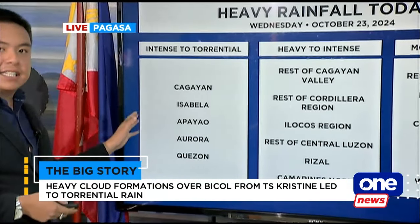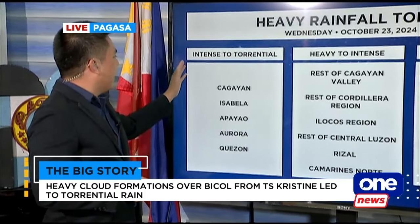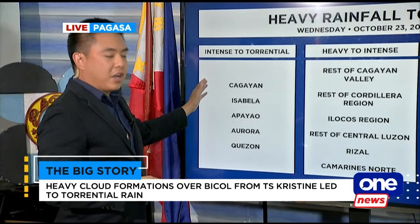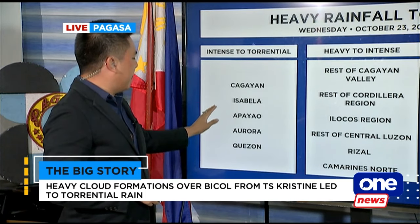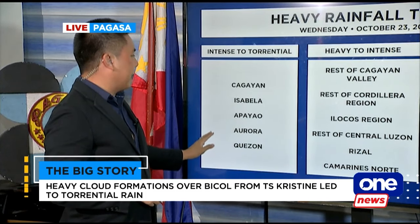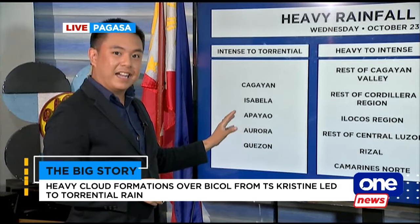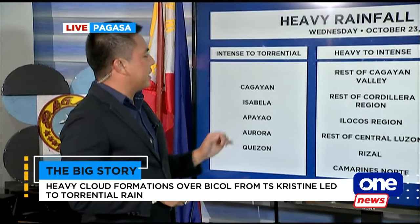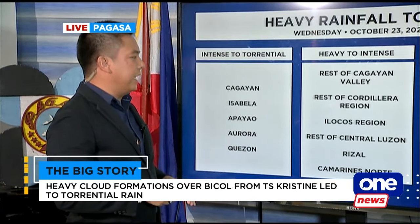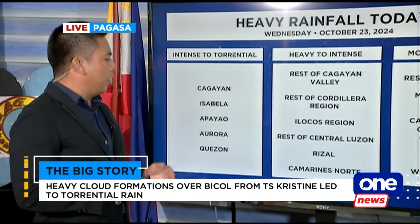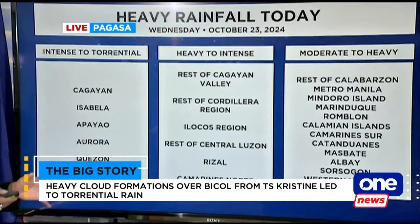These are the areas that PAGASA says will experience heavy rainfall today. Intense or torrential rains are expected over Cagayan, Isabela, Apayao, Aurora, and Quezon. Mapansin nyo, di ba — nakapaligid sa Isabela. And then we have heavy to intense rains over the rest of Cagayan Valley, the rest of Cordillera region, Ilocos region, the rest of Central Luzon, Rizal, and Camarines Norte.